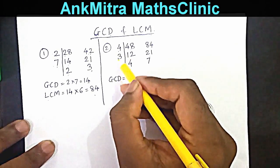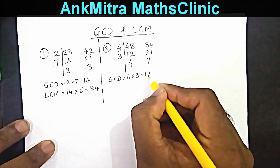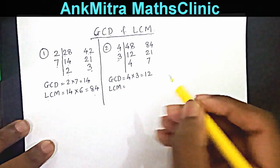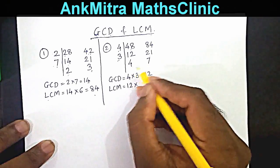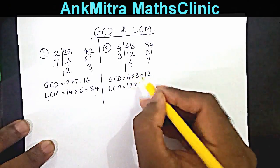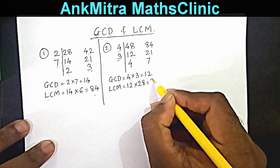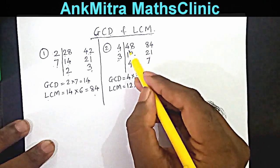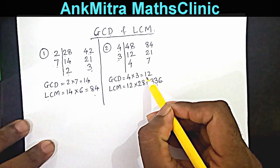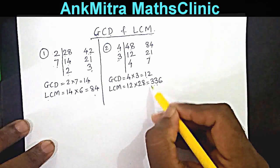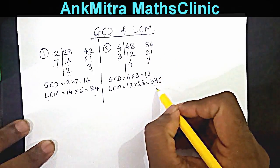GCD is the product of the common factors: 4 multiplied by 3, which is 12. LCM is the product of GCD (12) and the product of the uncommon factors (7 times 4 = 28), so 12 multiplied by 28 gives 336. LCM of 48 and 84 is 336, and GCD is 12. This confirms 336 is a multiple of both 48 and 84 and is the smallest possible one.